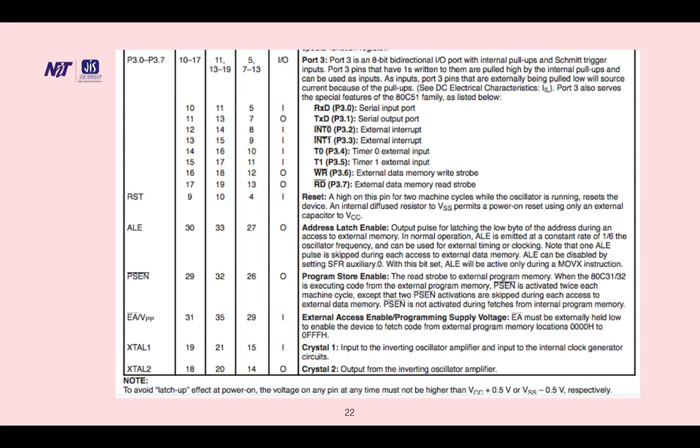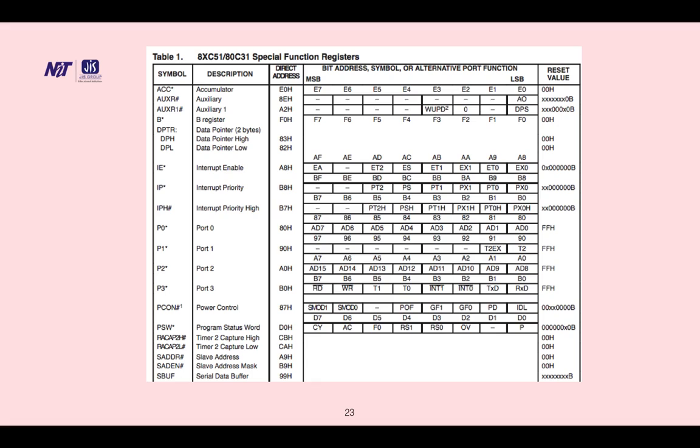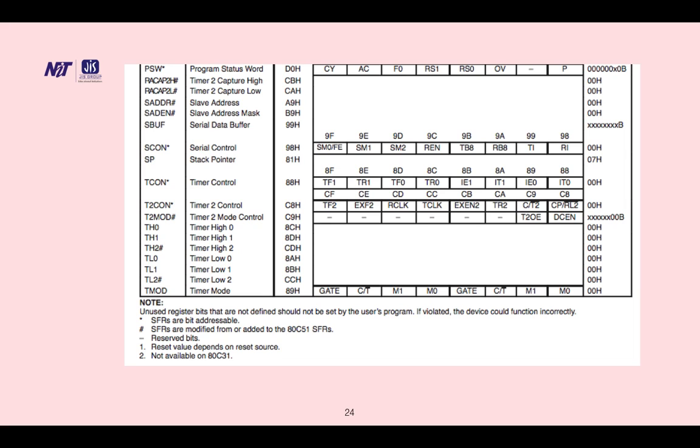Table 1: 8C51, 8031 special function registers. These are the special function registers. This is also split; there are a lot of registers, and how the values are set and their corresponding addresses, how they can be accessed, which is shown over there. This is the remaining part.